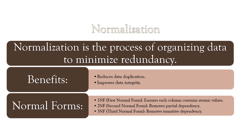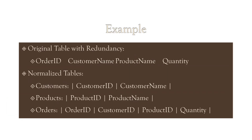We have First Normal Form, Second Normal Form, and Third Normal Form. The first table has redundancy, and the second table is a normalized table.